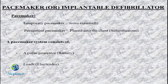We are going to start the pacemaker's CPT Coding Guidelines. A pacemaker is a small device used to treat some arrhythmias. It generates electrical impulses delivered by the electrodes to cause the heart muscle chambers to contract and therefore pump blood. We are using electrical impulses as a pacemaker.